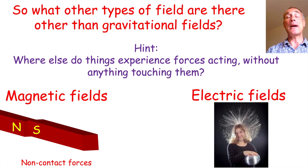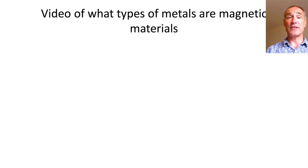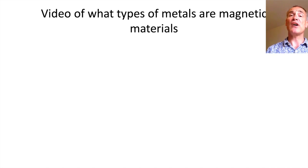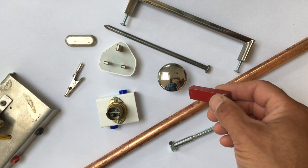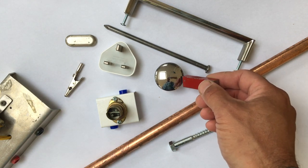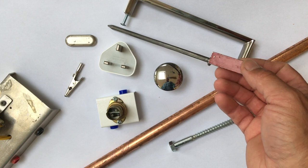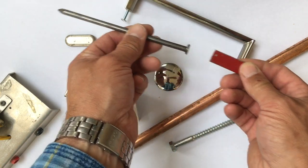So let's now have a look at magnetic fields. The first thing we're going to do is watch a short video to show you which metals and magnetic materials are attracted to magnets. I've got a whole load of different metals that I found at home during lockdown and I'm going to test each one with a magnet to see which ones are magnetic materials. So that nail there is made out of iron.